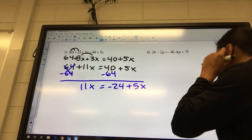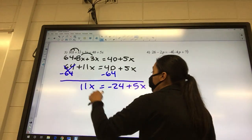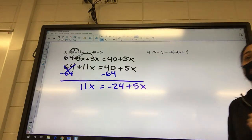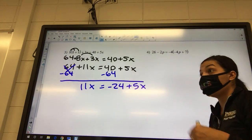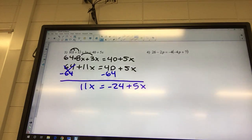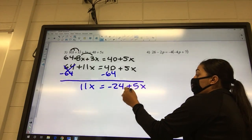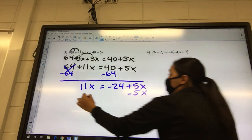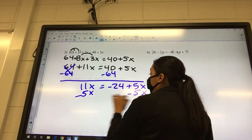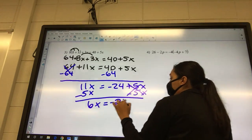11x, is that a letter or a number? It's a letter and it's on the left side of the equal sign. 24, letter or a number? That's a number, so it needs moved. No, it doesn't need to move because it's on the right. 5x, is it a letter or a number? It's a letter, so we need to move it. What do I need to do? Subtract 5x. So you got 6x equals negative 24.